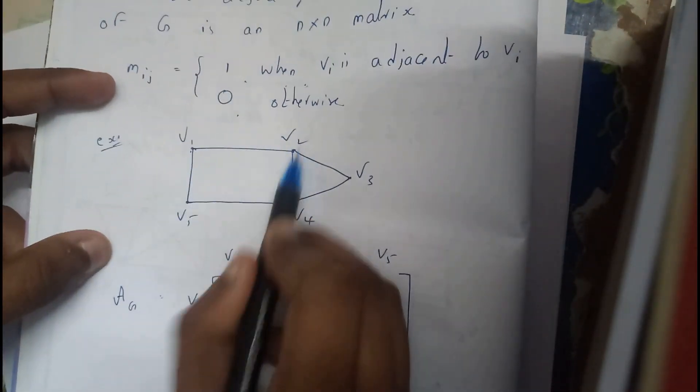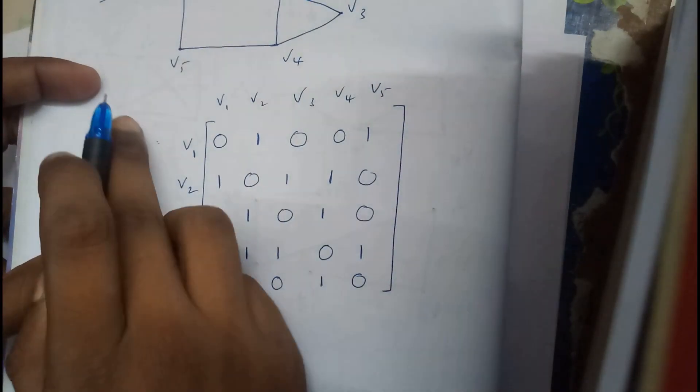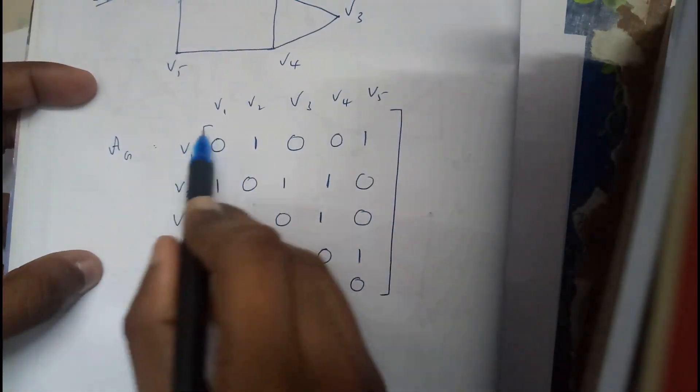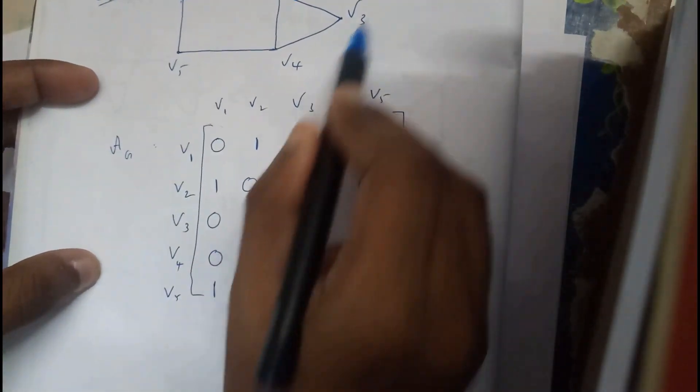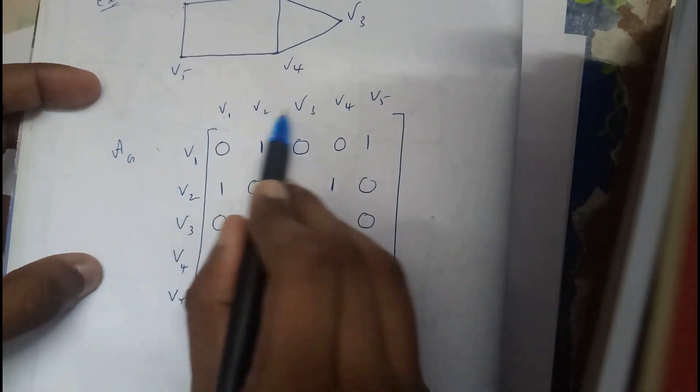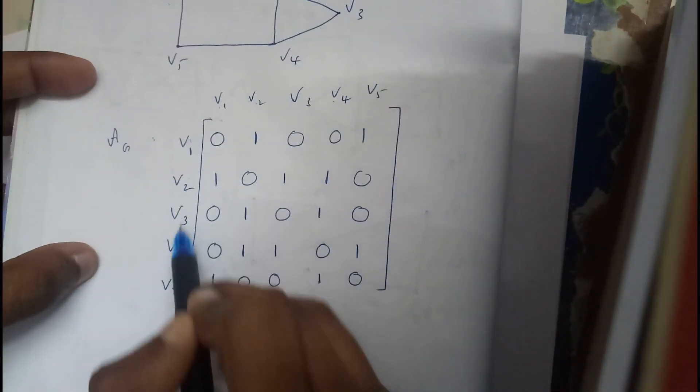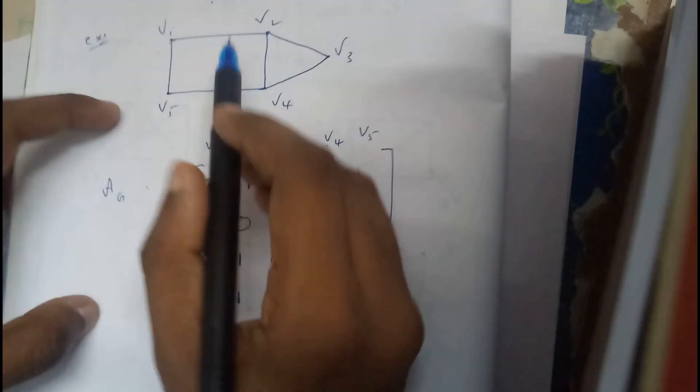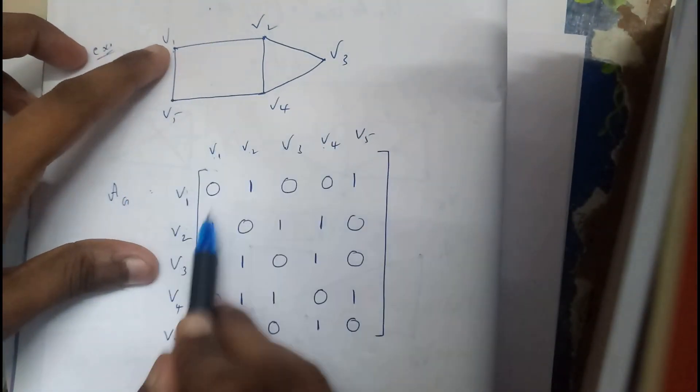Let us take this as example. In the matrix just draw a box and write all the possible vertices v1 to v5, v1 v2 v3 v4 v5, v1 v2 v3 v4 v5. So here there is a vertex, v1 to v2.